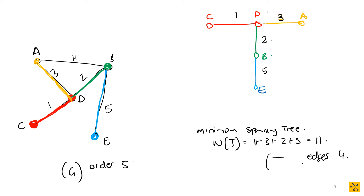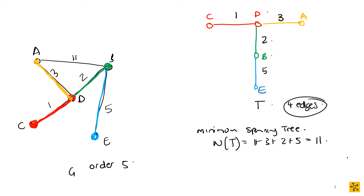Tree T has four edges, which makes sense since we stop at n minus one and the order was five. The minimum spanning tree has weight one plus three plus two plus five, which equals eleven. It happens to be T-shaped — it's not always going to be T-shaped — and it has a weight of eleven.